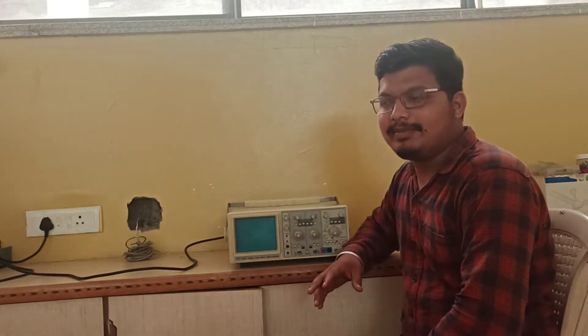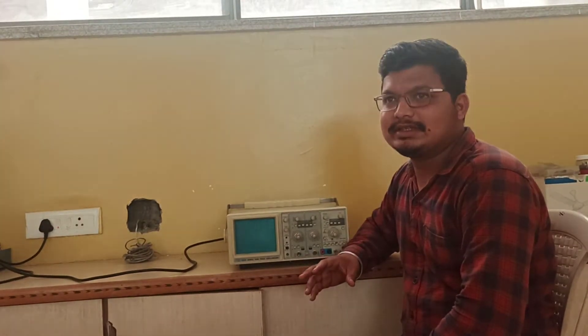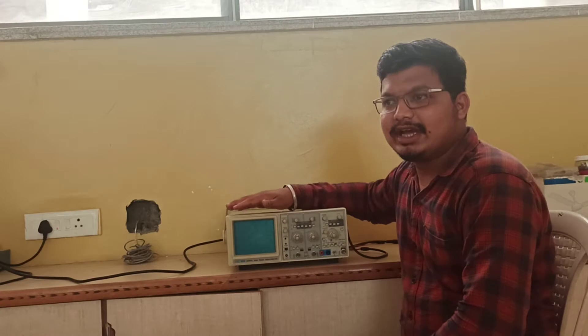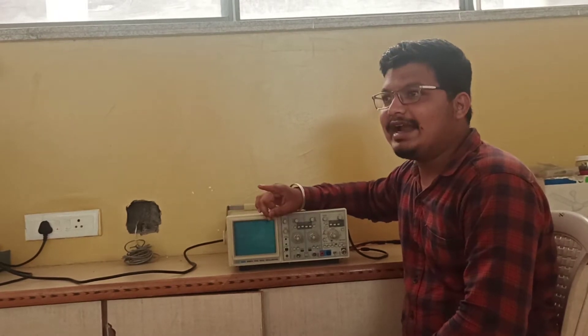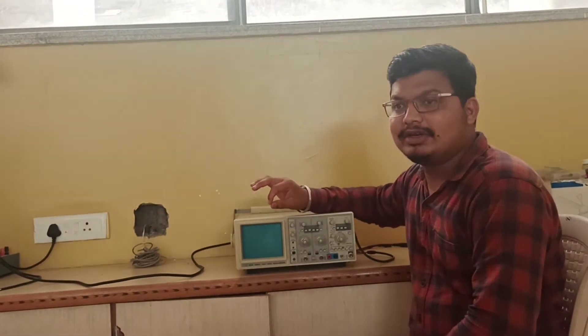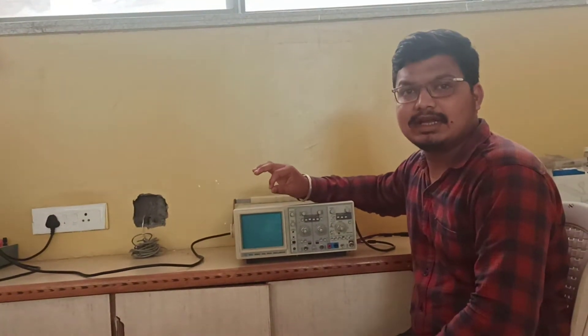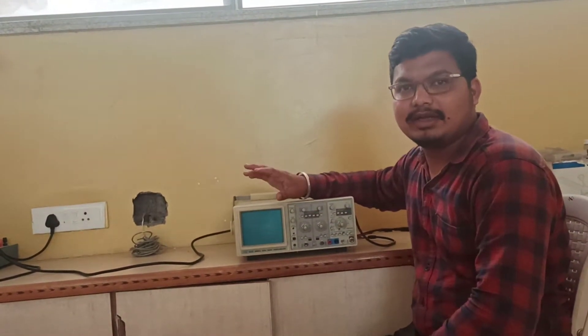In Analog Electronics Lab, we have to use such electronic devices which are CRO, RPS and function generator. You people already know the working of RPS. RPS means regulated power supply.